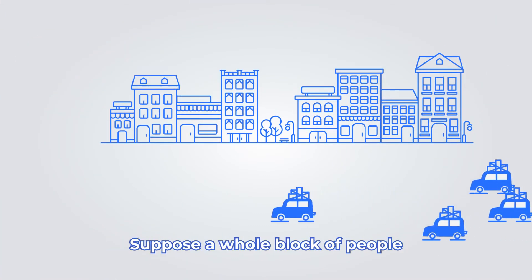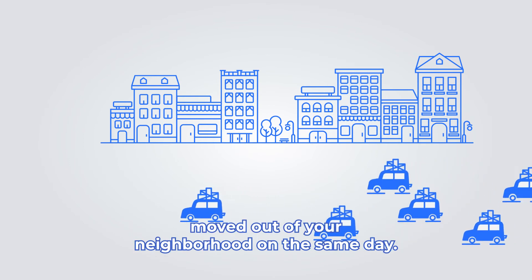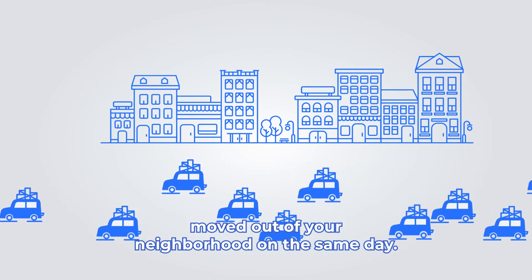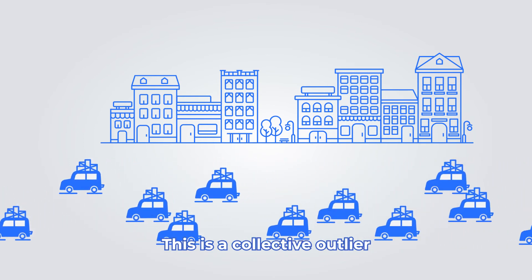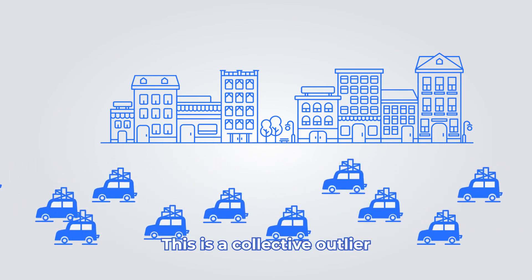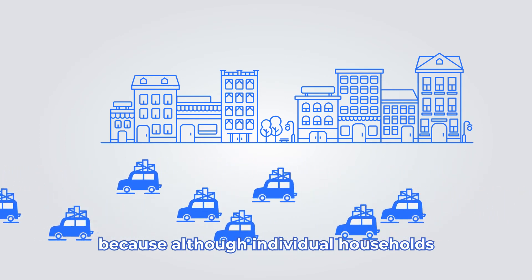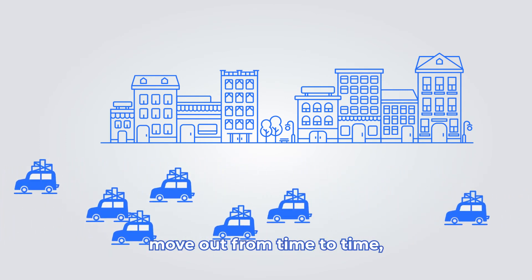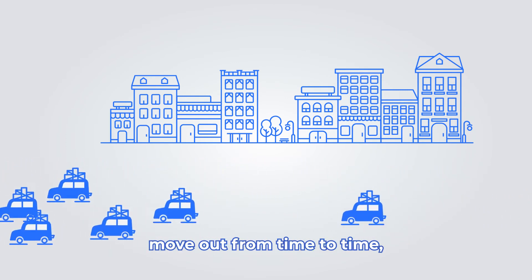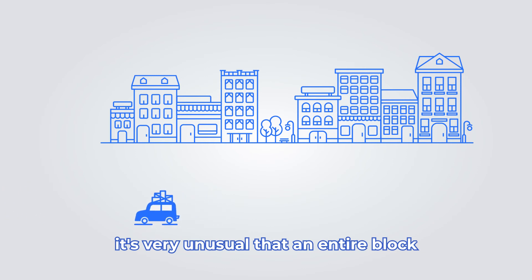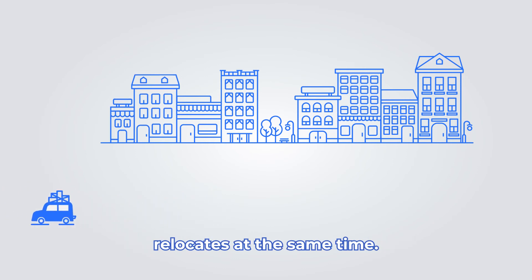A simple example illustrates this outlier: suppose a whole block of people moved out of your neighborhood on the same day. This is a collective outlier because, although individual households move out from time to time, it's very unusual that an entire block relocates at the same time.